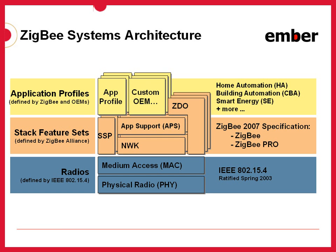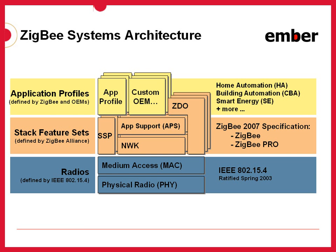These are the Home Automation Profile and Smart Energy Profile. I mention these two because they are already completed and in use by existing devices in the market today. There are other profiles being developed, but those are currently still in draft format. The Home Automation and Smart Energy Profiles can be found in a published, completed form on the Zigbee.org website for public download by members and non-members of the Zigbee Alliance alike.